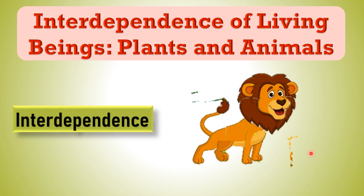Whether it's our body, whether it's an animal's body, whether it's a plant, we need complete parts of the body to complete the image or figure. This dependency on each other is called interdependence.